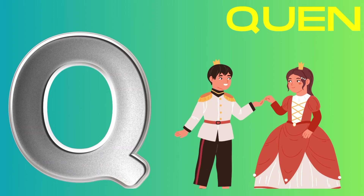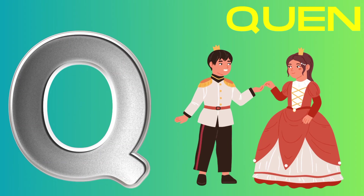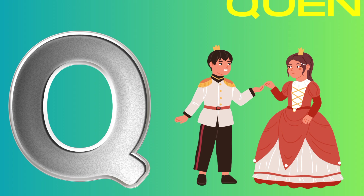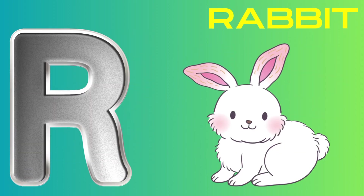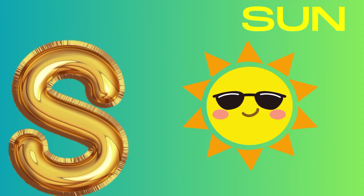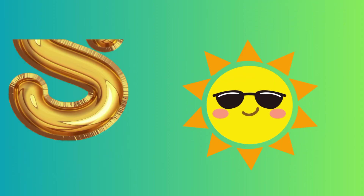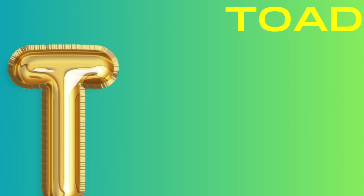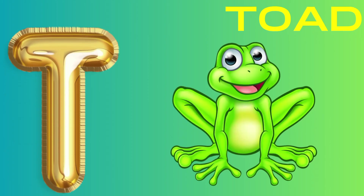Q is for queen, k-k-queen. R is for rabbit, r-r-rabbit. S is for sun, s-s-sun. T is for toad, t-t-toad.